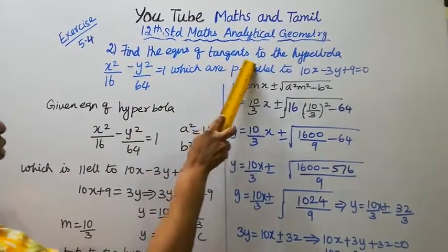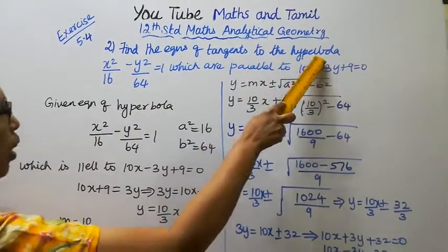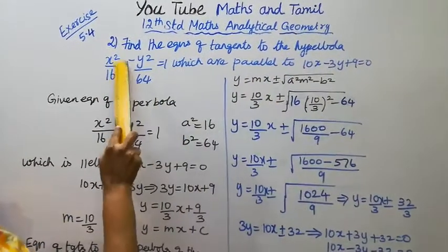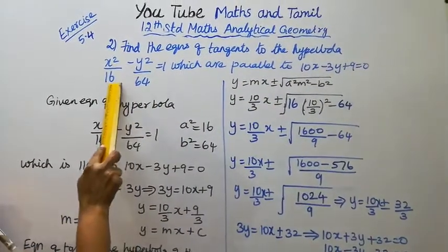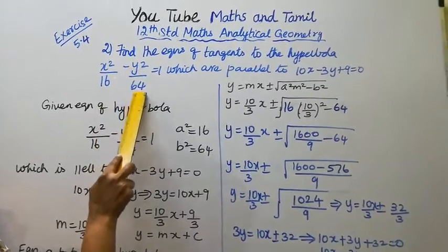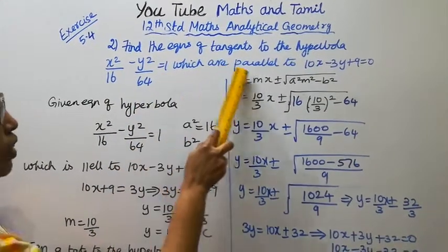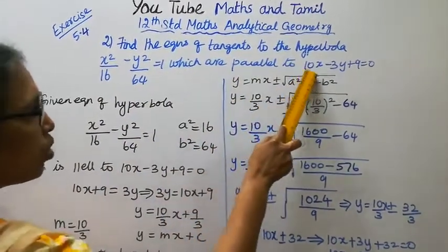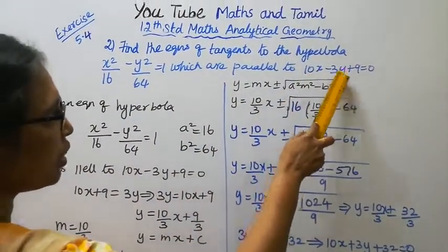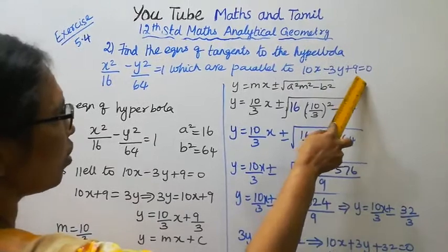Find the equation of tangents to the hyperbola x² by 16 minus y² by 64 equal to 1, which are parallel to 10x minus 3y plus 9 equal to 0.